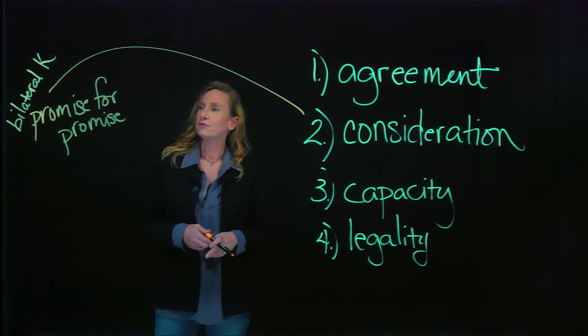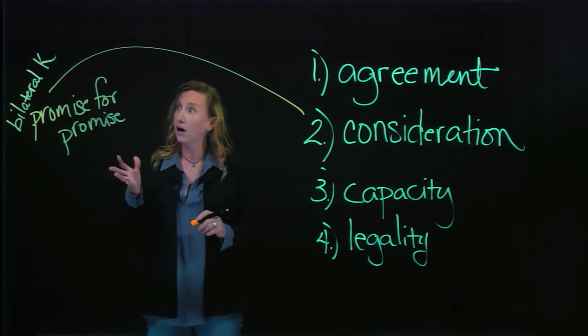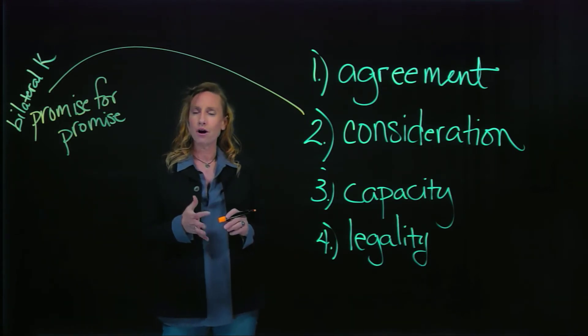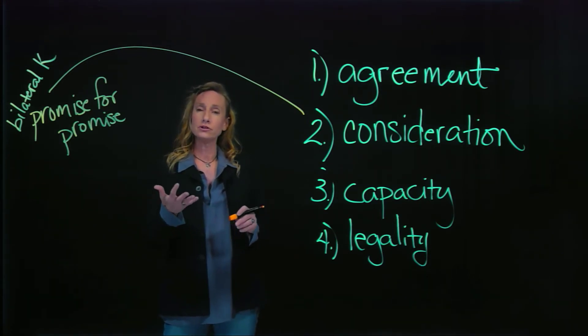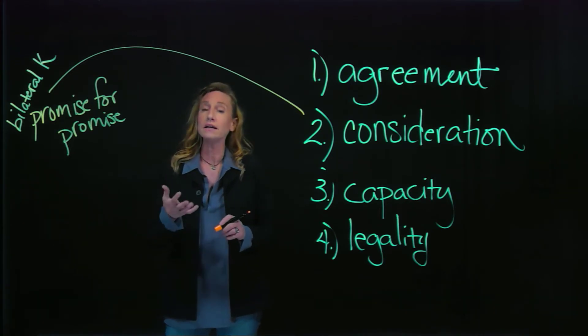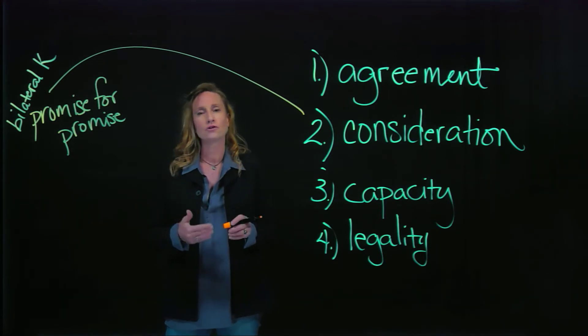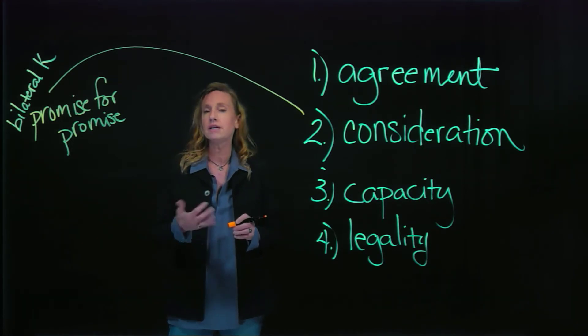I've written promise for promise here in the words bilateral K. The capital K is shorthand for contract. So a promise for promise might be if I promise to tutor someone in business law once a week, and in exchange that person will help walk my six dogs. So we're exchanging two things of value.